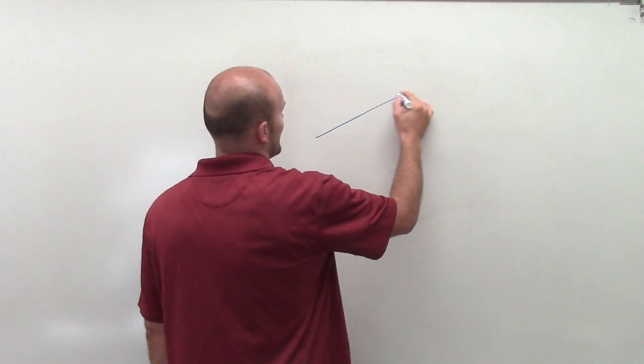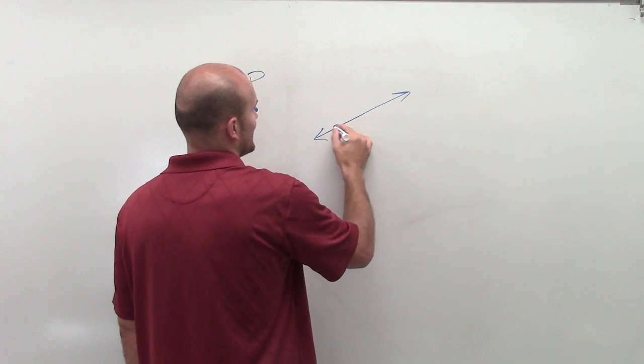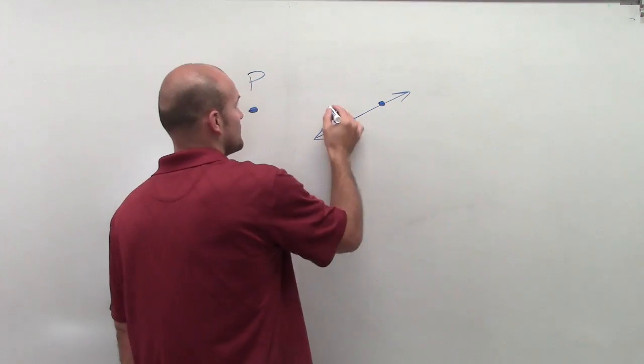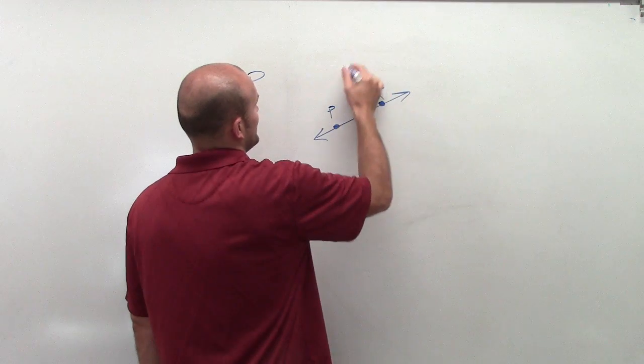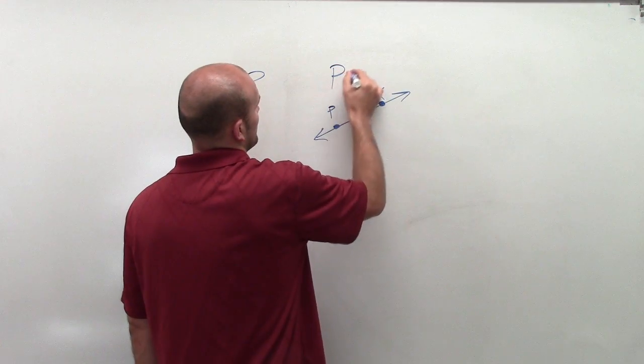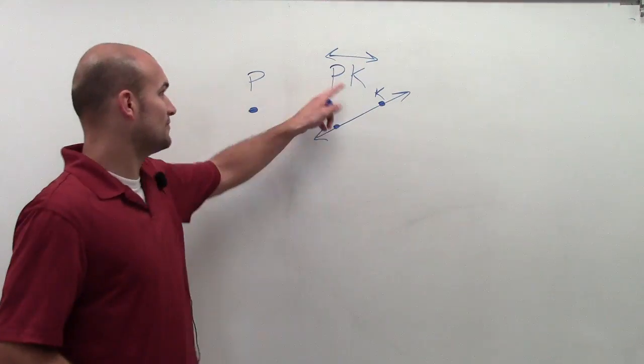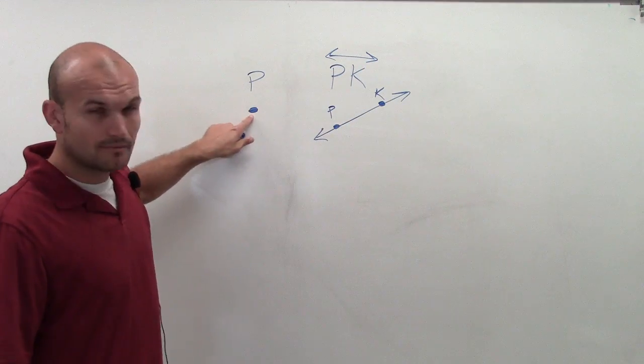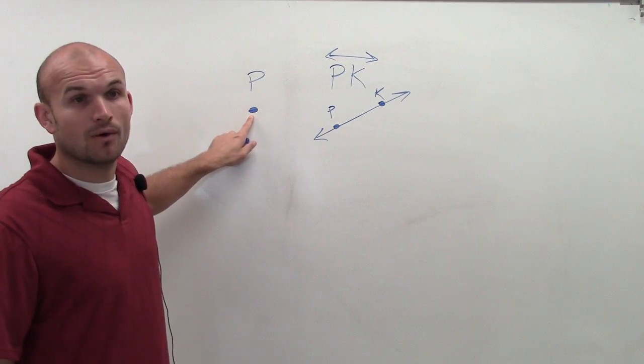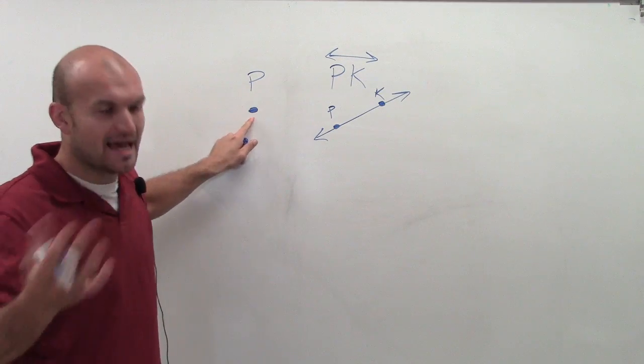Then we got to a line. And a line contains infinitely many points, PK, but it has no thickness. The reason it has no thickness is because it's made up of points that have no size.